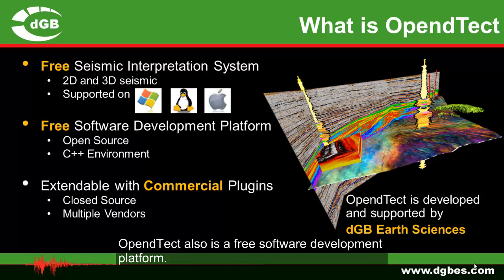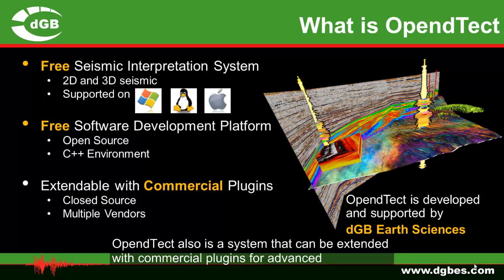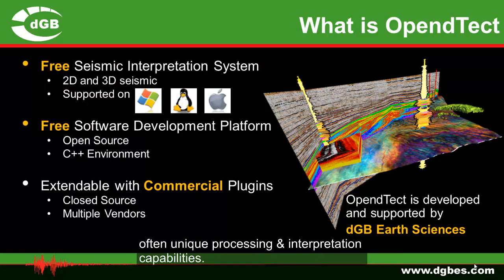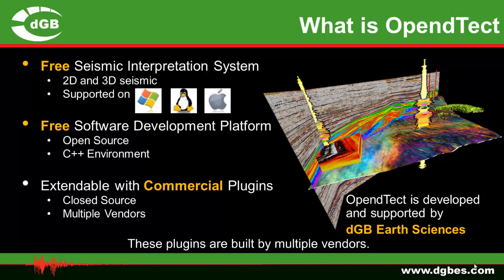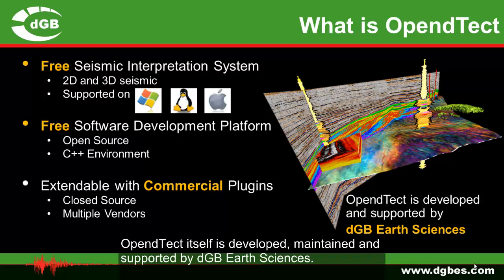OpenDetect is also a free software development platform. The software is released with its source code, which is written in C++. OpenDetect is also a system that can be extended with commercial plugins for advanced, often unique processing and interpretation capabilities. These plugins are built by multiple vendors. OpenDetect itself is developed, maintained and supported by DGB Earth Sciences.